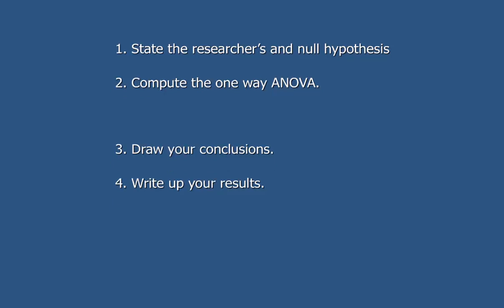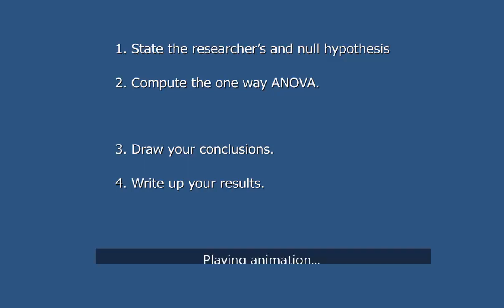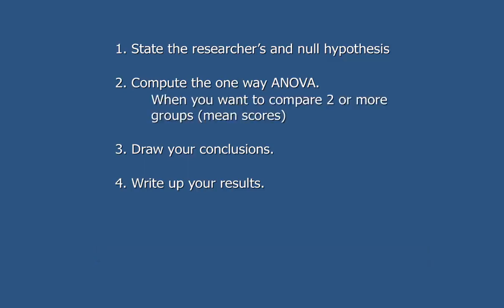The reason why we're going to use the one-way analysis of variance is because in this example we're looking at whether a certain type of diet affects how much weight one would lose. We randomly assigned our subjects to eat one of three different types of diets: a low-carb diet, a low-fat diet, or a normal diet. Because we want to compare more than two groups, we need to use the one-way analysis of variance.